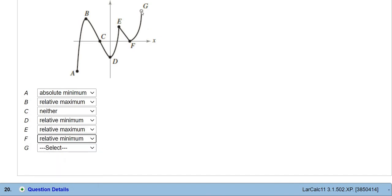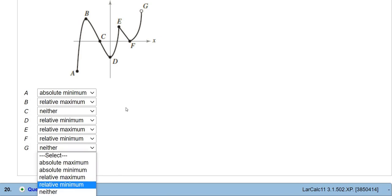And then G is nothing because it's a hole. Now, if G was filled in, let's say this was a solid dot, then G would be an absolute maximum. But because it's a hole, we don't include it. So it's neither. Kind of a nice problem. That's it.